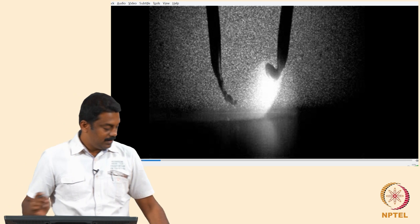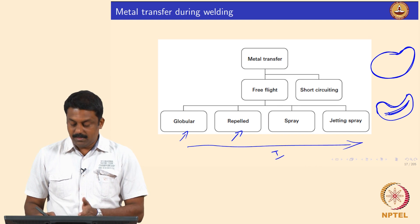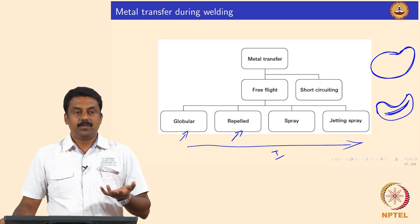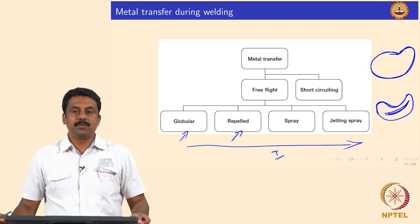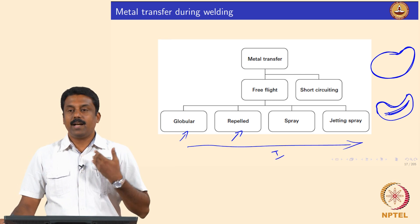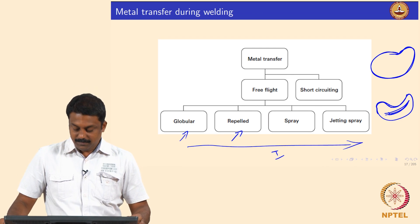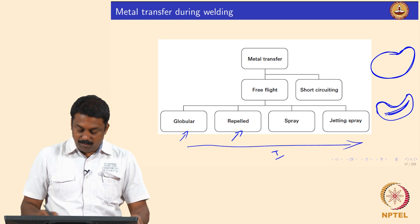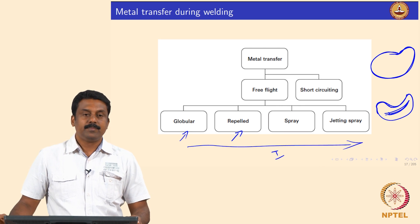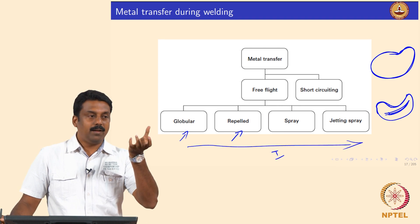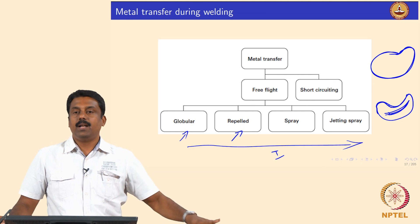If you increase the current further, the globular transfer becomes spray transfer when the Lorentz force supersedes the gravitational forces. If you keep increasing it, you also start melting more — at very high current you start making a jetting spray and the spray velocity will be much higher. These four modes are commonly observed during GMAW welding and are known as free flight, because the droplets are transferred from the tip to the workpiece with no contact between the consumable and the weld pool.